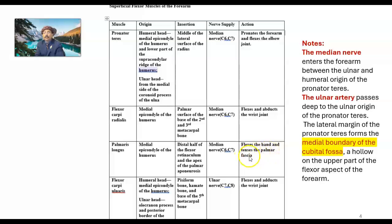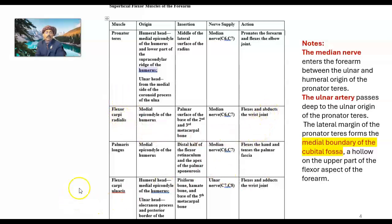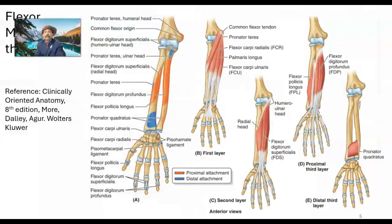Flexor carpi ulnaris: origin from the medial epicondyle of the humerus, ulnar head from the olecranon process and posterior border of the ulna. Insertion: pisiform bone, hamate bone, and base of the fifth metacarpal bone. Nerve supply: ulnar nerve. Action: flexes and adducts the wrist joint — note that flexor carpi radialis abducts, but flexor carpi ulnaris adducts.